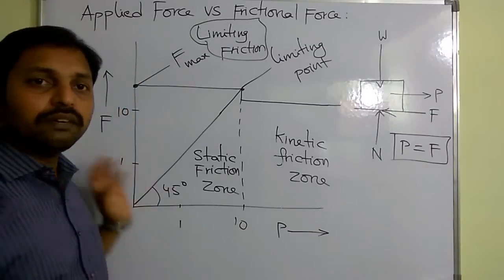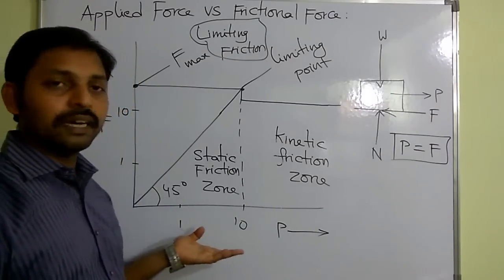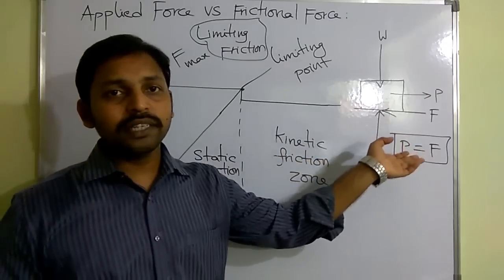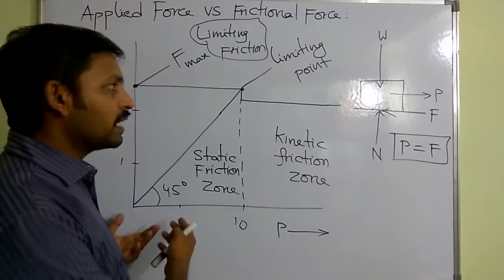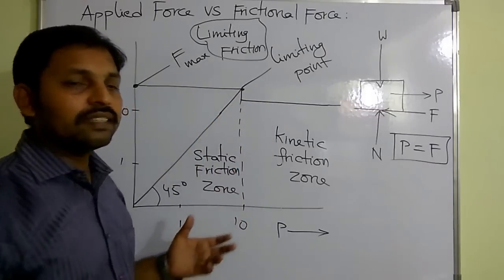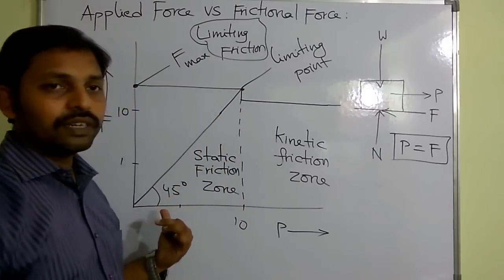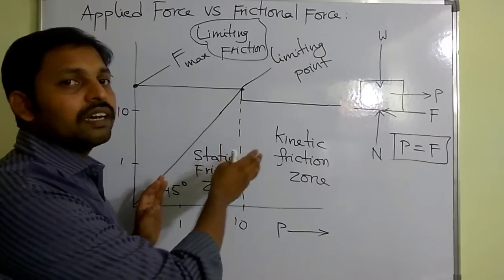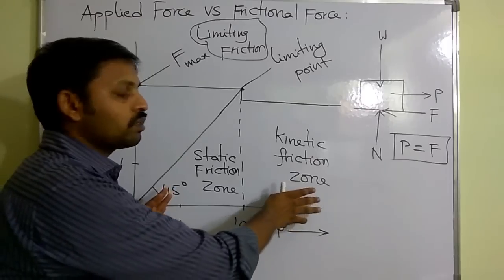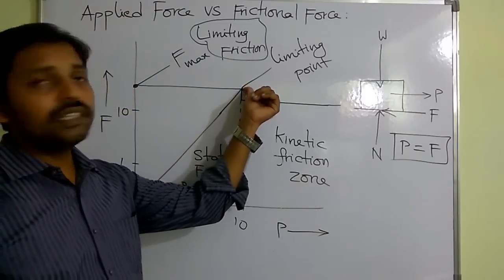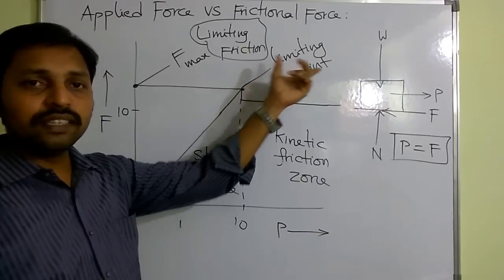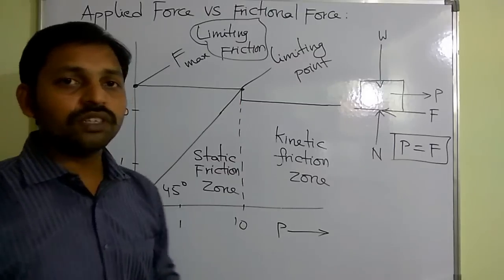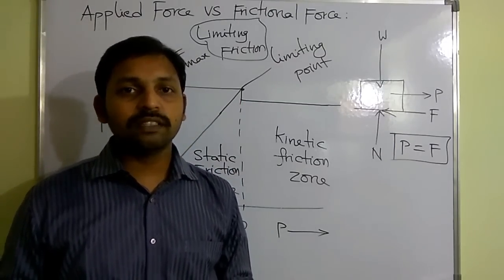We have considered the graph between applied force on the x-axis and frictional force on the y-axis. When the body is under the state of rest, the applied force is always equal to the frictional force, giving a straight line at 45 degrees — the static friction zone. After that, friction suddenly decreases and then maintains a constant value — the kinetic friction zone. The transition point is the limiting point, where friction is maximum. That maximum friction is called limiting friction — the maximum value of frictional force experienced by the body.